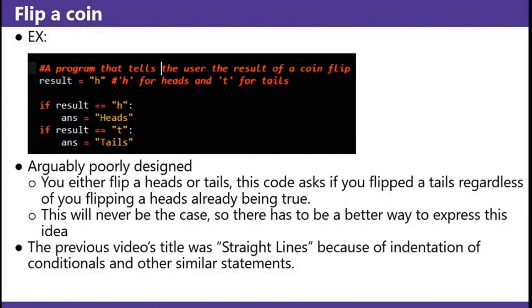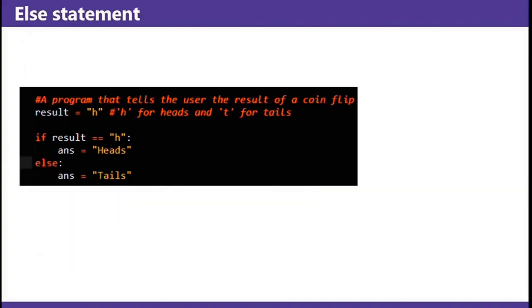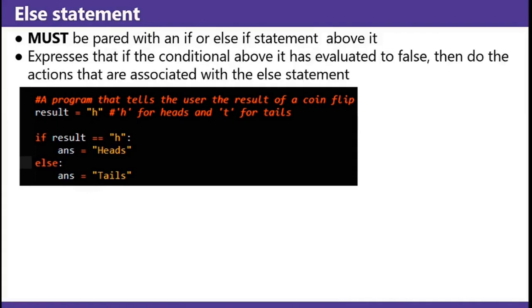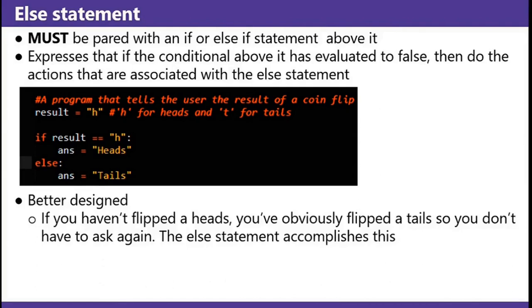And side note: the previous video's title was 'Straight Lines' because of the indentation of conditionals and other similar statements — if you look at the example, there's indentation. Else statement. This is a program that's a flip of the last one: instead of checking 'if result equals H, if result equals T', it says 'if result equals H, else'. An else statement must be paired with an if or else if statement above it. It expresses that if the conditional above it evaluated to false, then do the actions associated with the else statement. This is better designed — if you haven't flipped a head, you've obviously flipped tails, so you don't have to ask again.